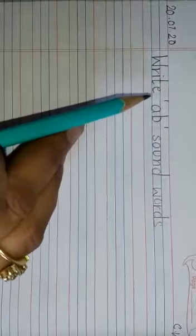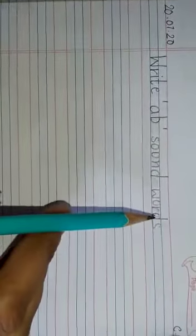Then you have to write down AB sound words. You are supposed to write down AB sound words. So we are going to do it together today. I will tell you how in this video.